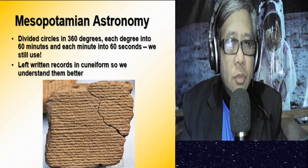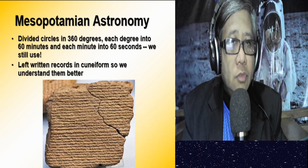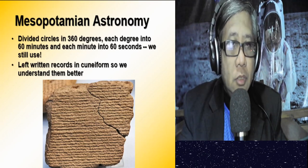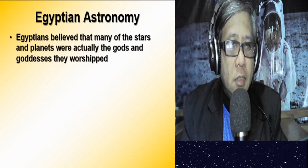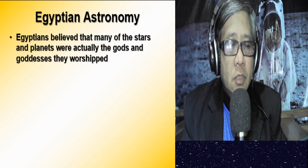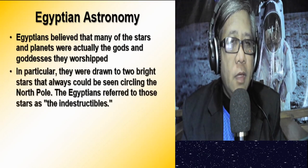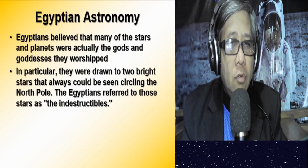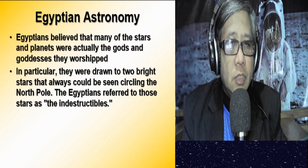Just like the Mesopotamians, the Egyptians also associated the study of the heavens with religion. The Egyptians believed that many stars and planets were actually gods and goddesses they worshipped. They were particularly drawn to two bright stars that always could be seen circling the North Pole, which the Egyptians called 'the indestructibles' — Kochab, in the bowl of the Little Dipper (Ursa Minor), and Mizar, located in the middle of the handle of the Big Dipper (Ursa Major).